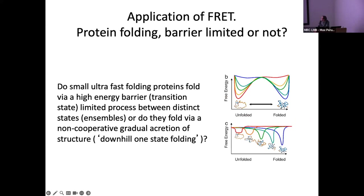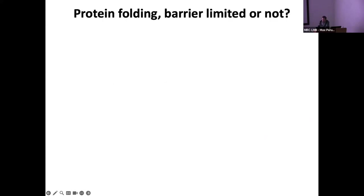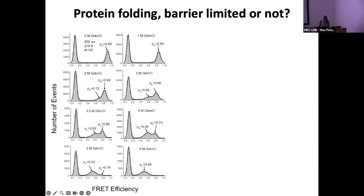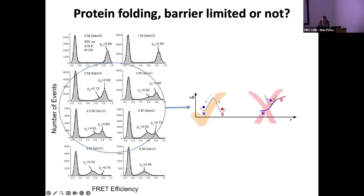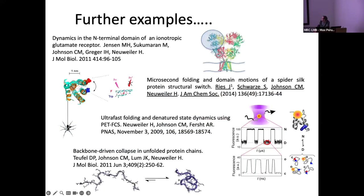Chris Johnson used FRET-FCS to study protein folding — specifically whether there was a high energy barrier transition state, i.e., does the protein unfold in two states or gradually? He took his protein and added guanidinium chloride at different concentrations — 1 molar, 2 molar, 3 molar. Ignoring the zero peak, you can see a FRET signal and as the protein is denatured a second peak appears — just two distinct peaks. When completely denatured, only one peak remains. This proved it was a high energy barrier transition state, and FRET-FCS is a very powerful technique for protein folding studies.